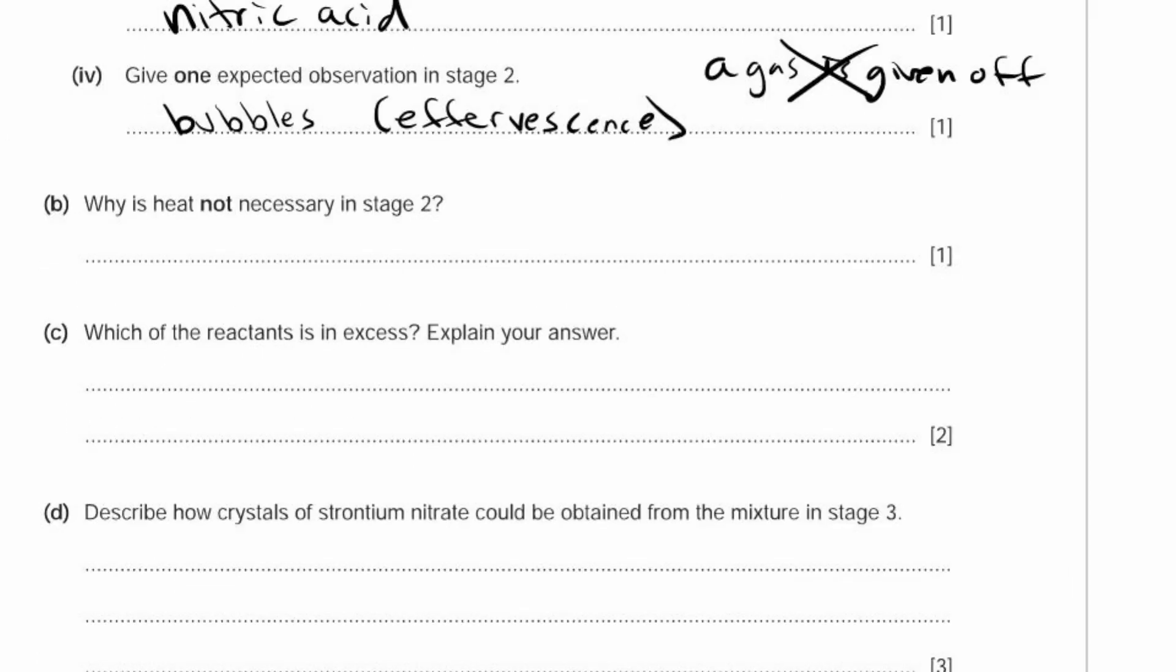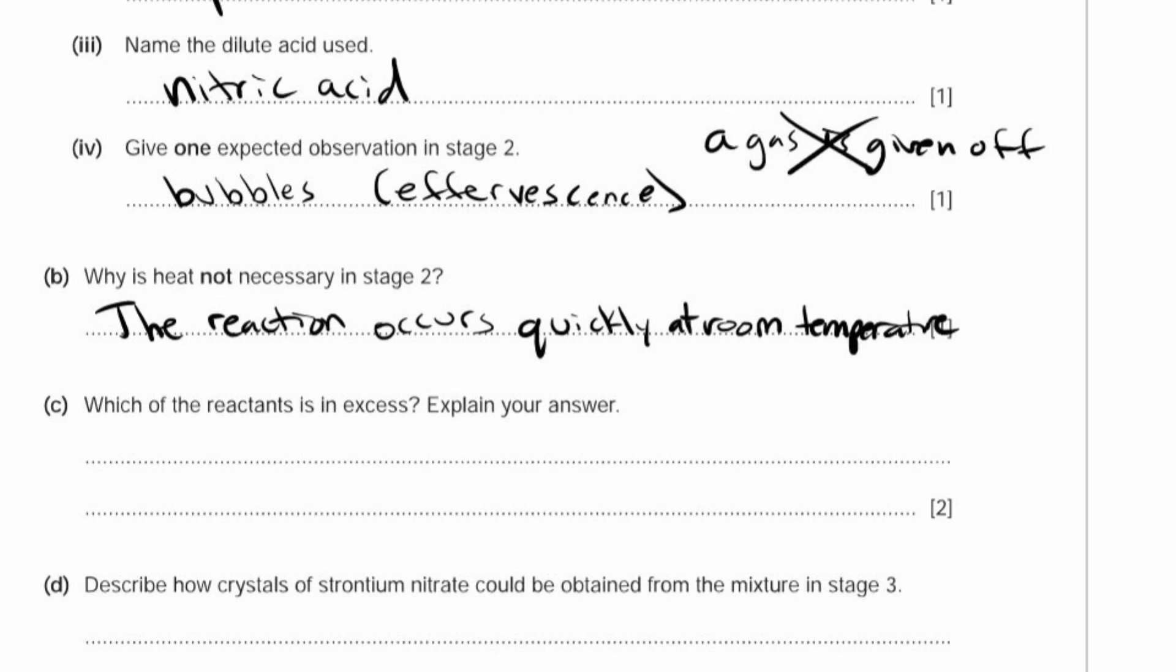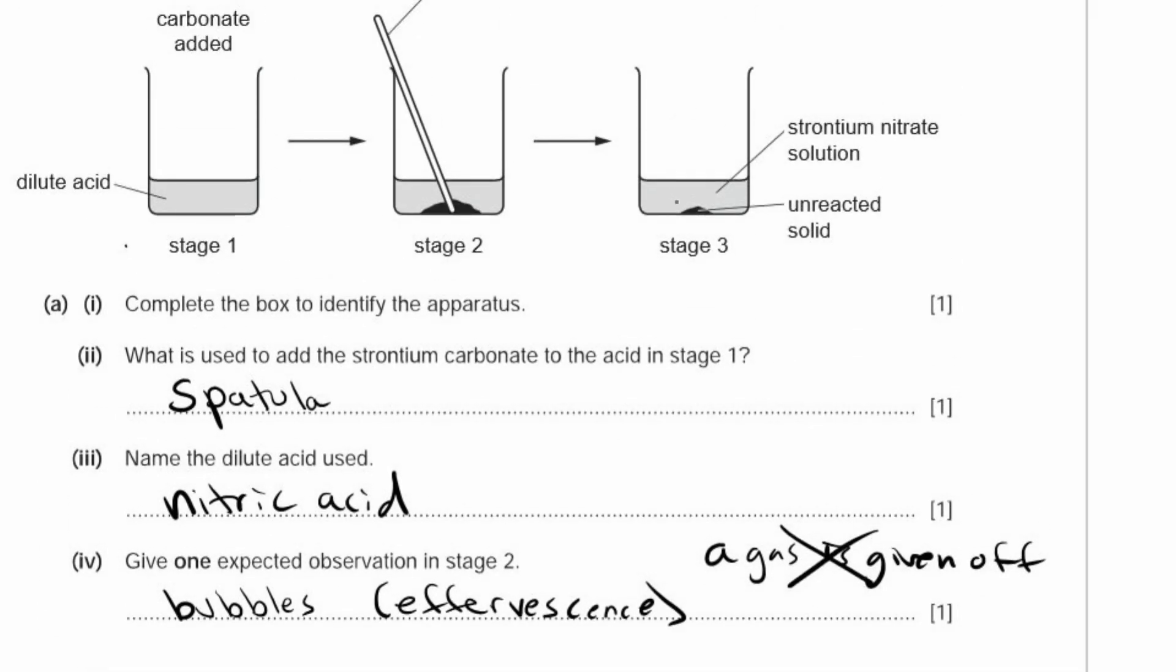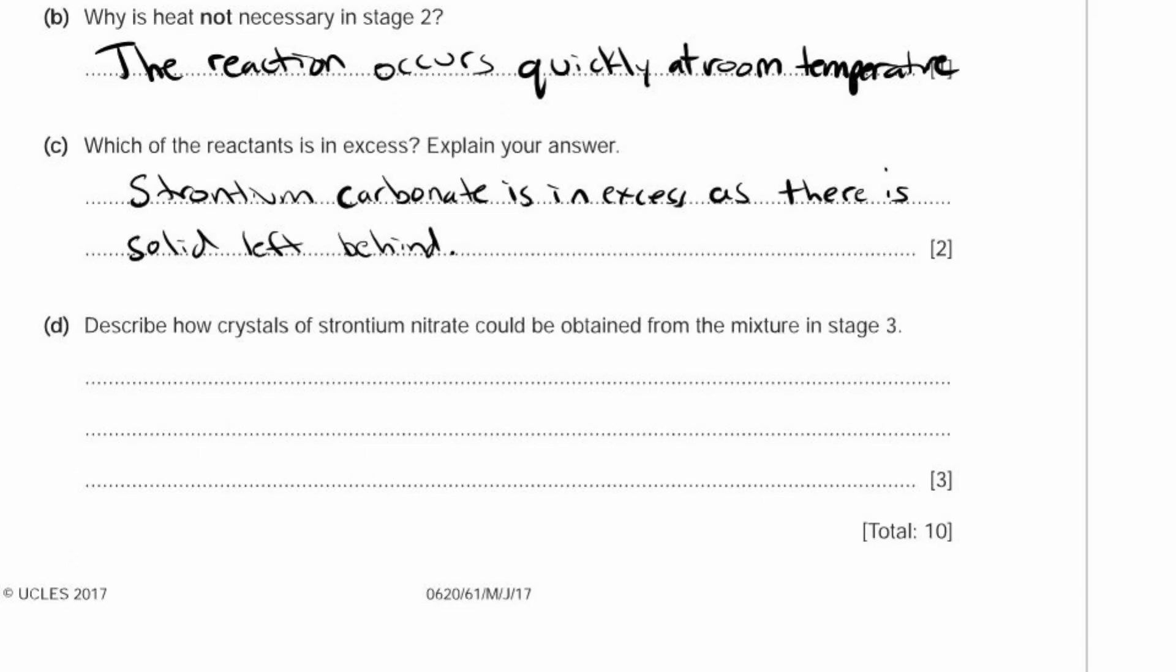B. Why is heat not necessary in stage 2? The reaction occurs quickly at room temperature, so you don't need to add extra heat. C. Which of the reactants is in excess, and explain your answer. Strontium carbonate is in excess because there is a solid left behind at the end. If nitric acid was in excess, all of the solid would be dissolved.